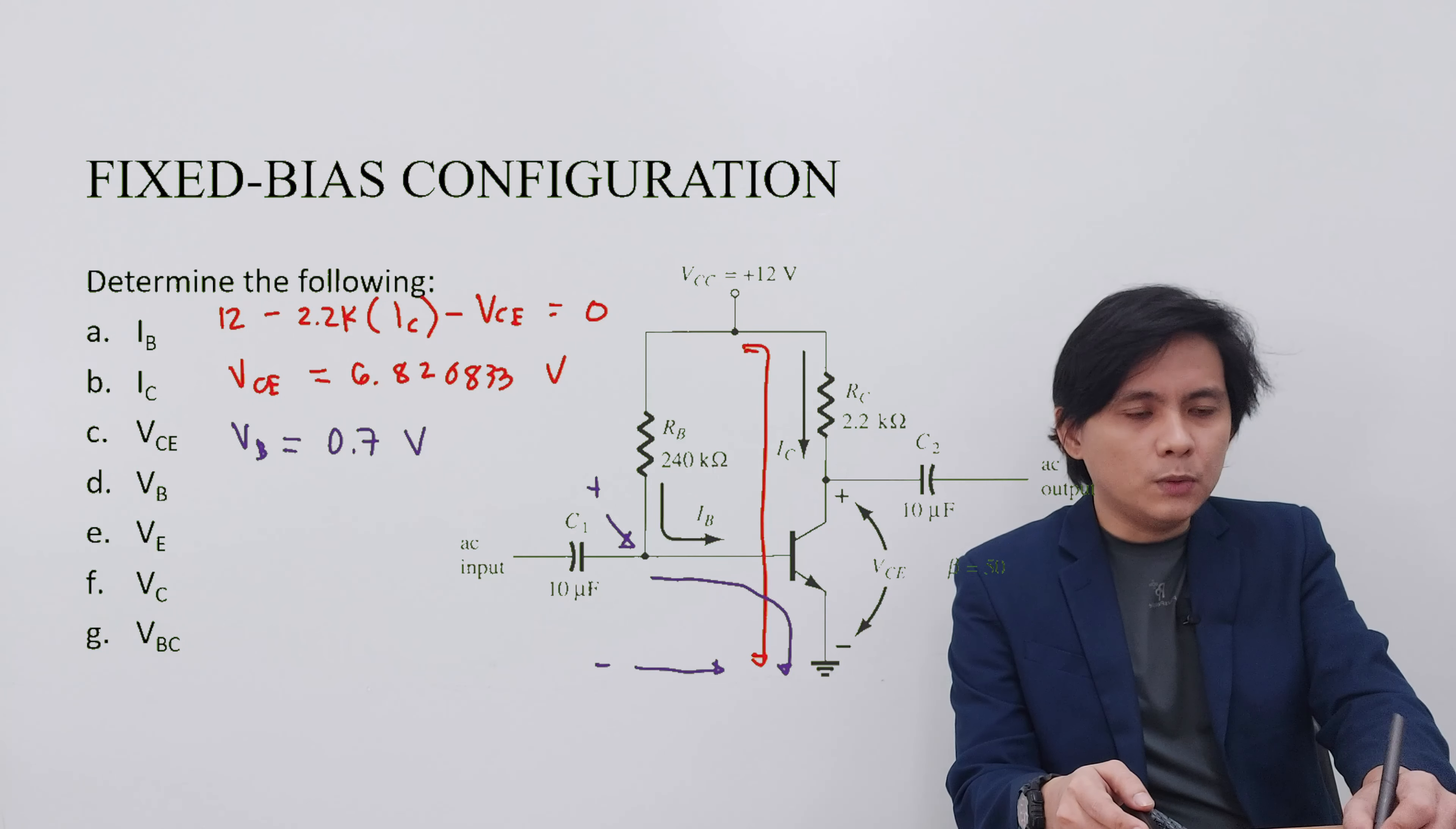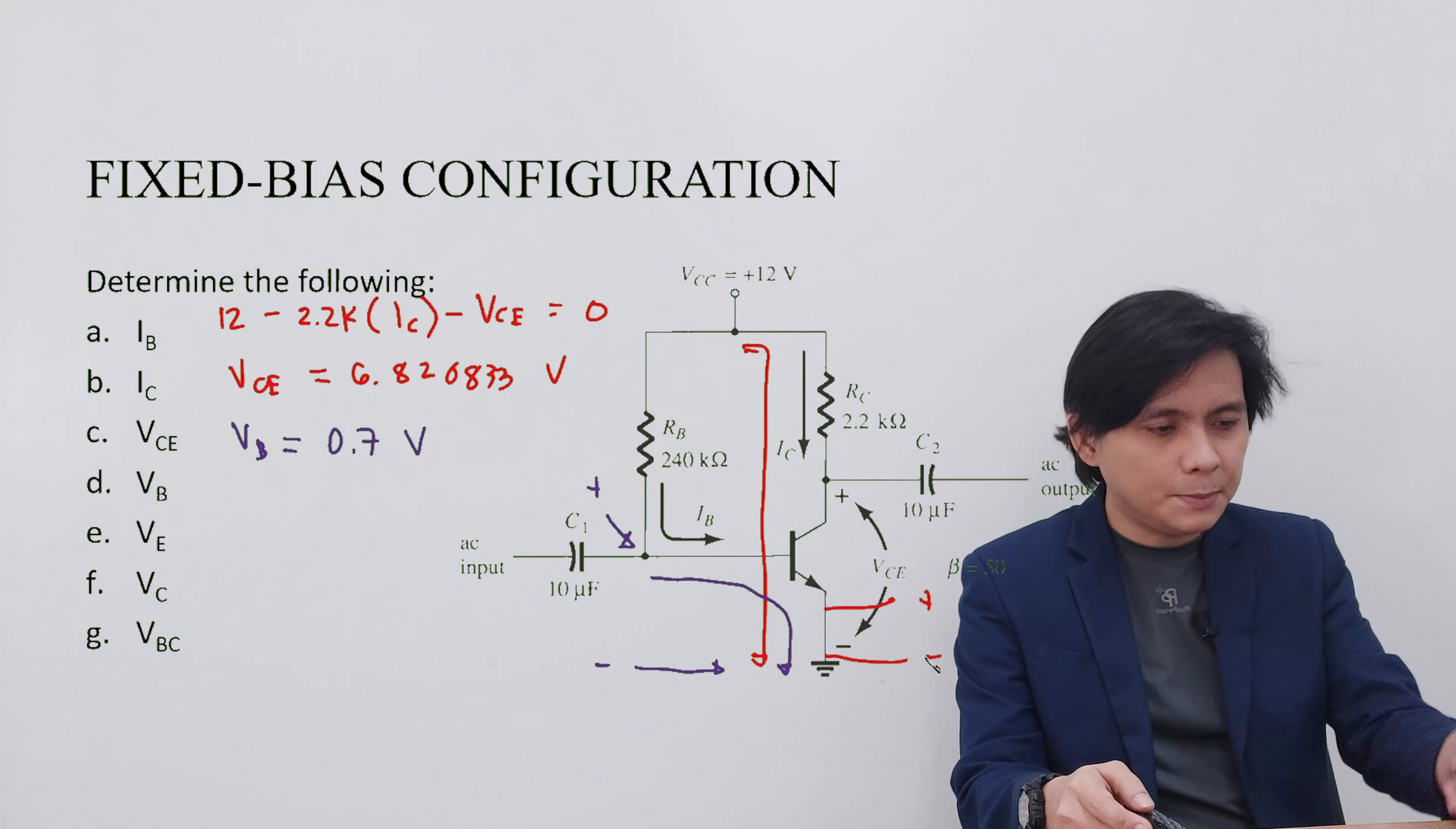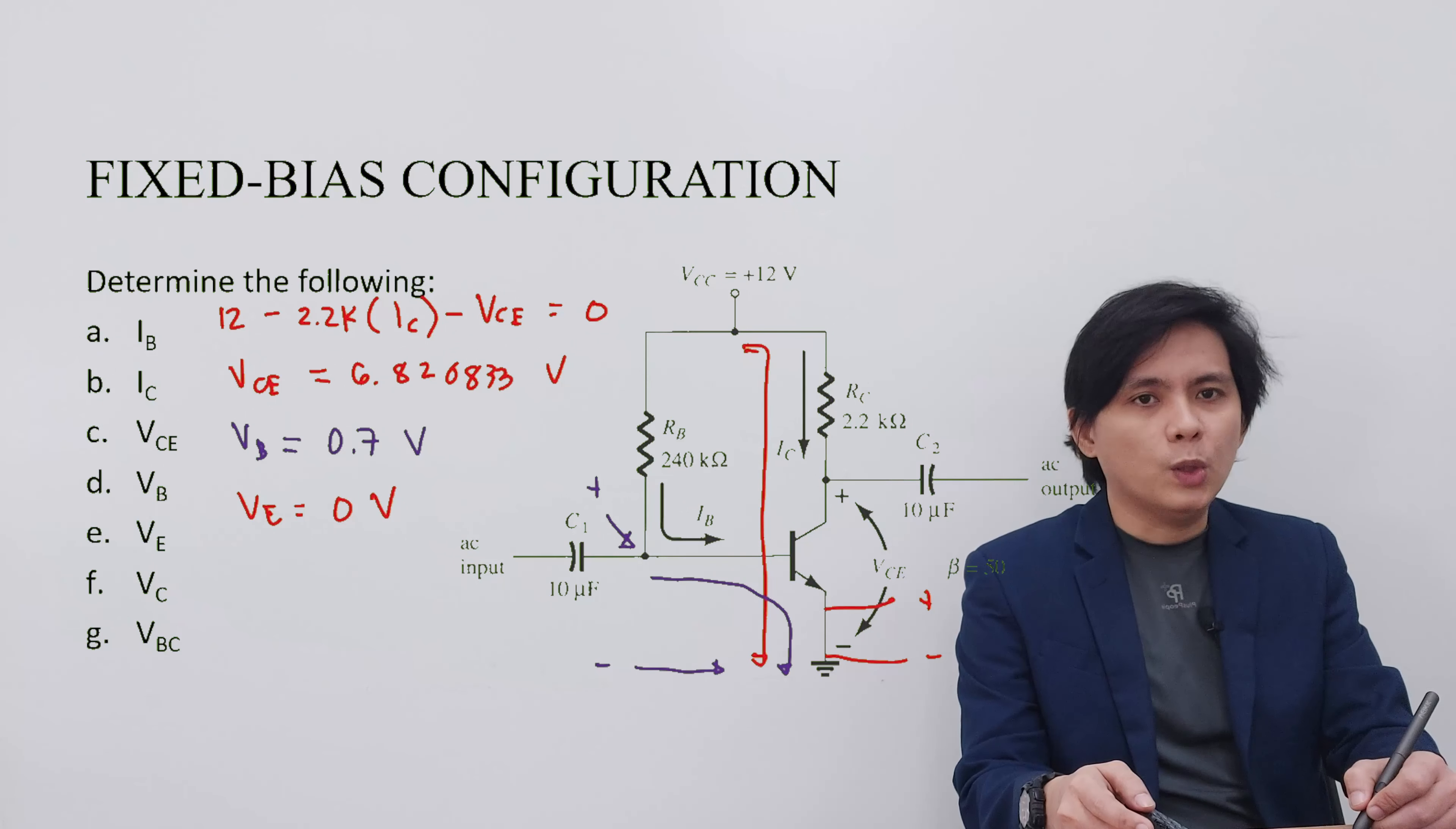The next unknown that we have to solve is VE. VE is the voltage that we can measure from the emitter with the other probe of the voltmeter to the ground. By simply analyzing the circuit, it is obvious that VE is connected to the ground.